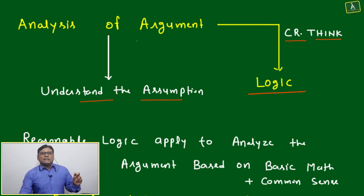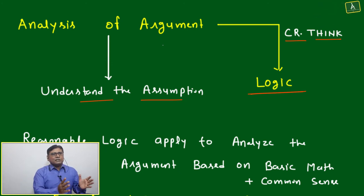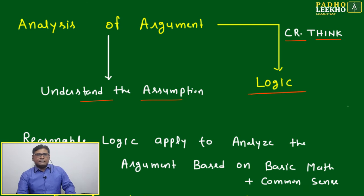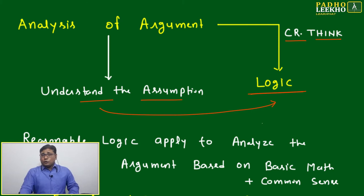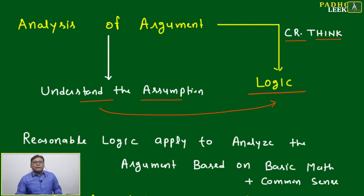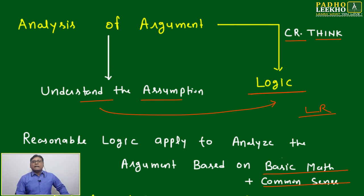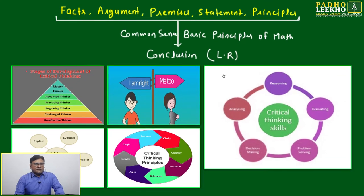Although facts, arguments, premises, and statements have big differences philosophically, for your level of CAT preparation you can treat them as one form — consider it all as a scene. There are 36 types of statements that can be generated in logic, and there's a 450-page book dedicated only to that — but no need to go that deep. For CAT preparation, if you apply common sense and basic mathematical principles to facts, arguments, premises, and statements, you will reach a conclusion — that is your logical reasoning.